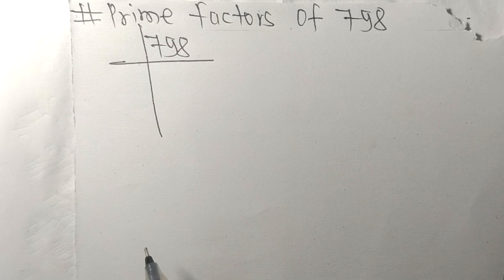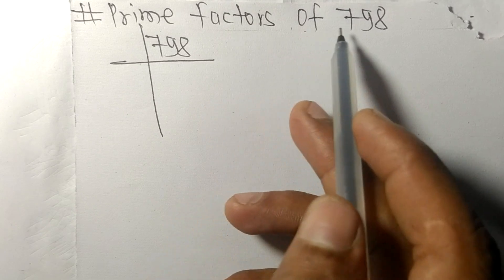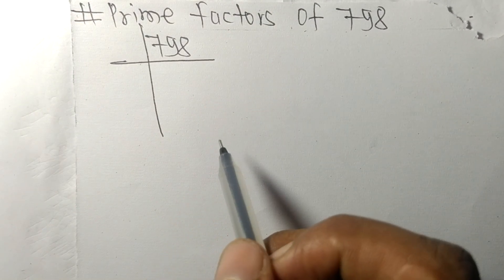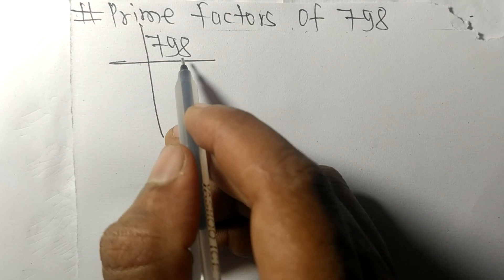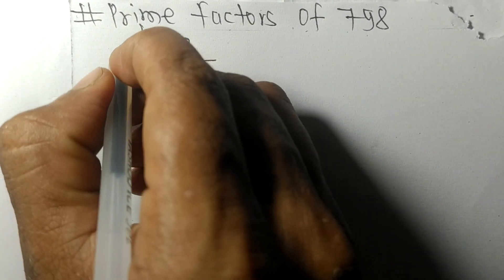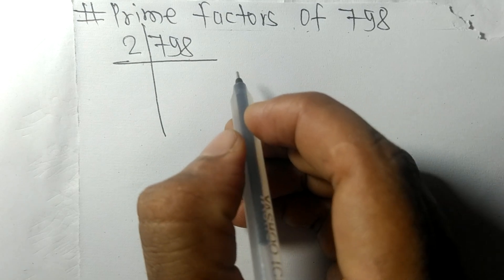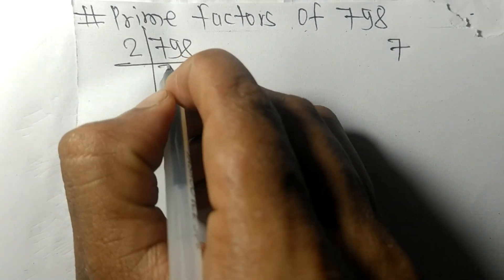Today in this video we shall learn to find the prime factors of 798. Since it ends with an even number 8, it is divisible by 2. Starting with 7, 2 times 3 means 6, subtracting we get 1. Then this 9, 19. 2 times 9 means 18, subtracting we get